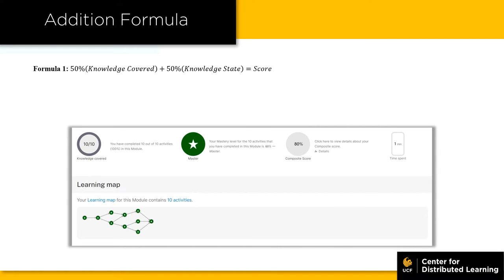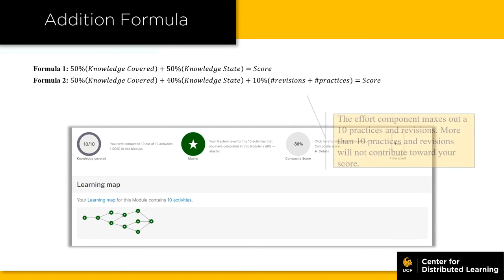The first formula calculates a score that is 50% knowledge covered and 50% knowledge state. The second formula calculates a score that is 50% knowledge covered, 40% knowledge state, and 10% effort. Your effort component of the module's score is the total number of practices and revisions you have done in the module. Practice and revise activities are weighted equally, and the effort component maxes out at 10 points. Practices or revisions above 10 times will not affect your effort component.